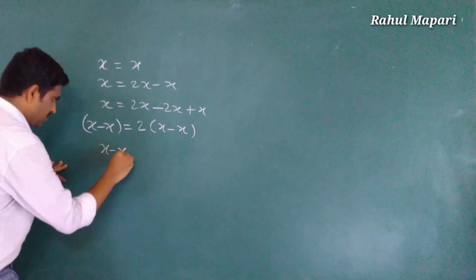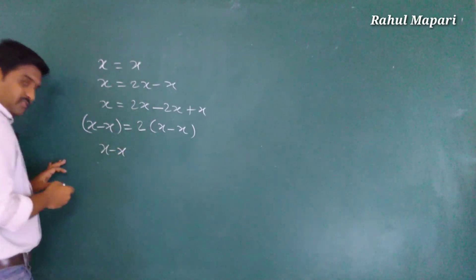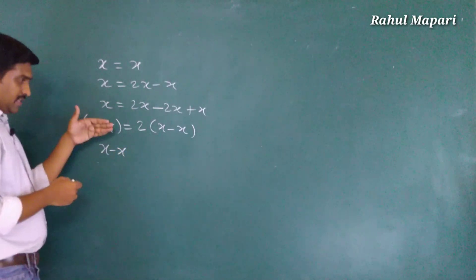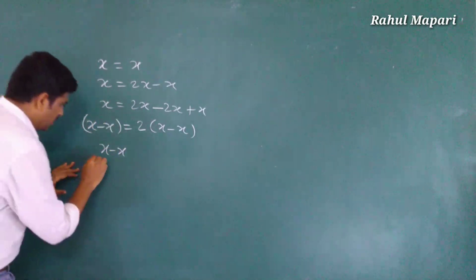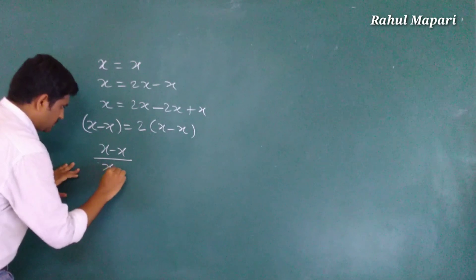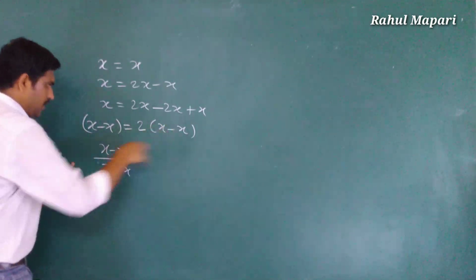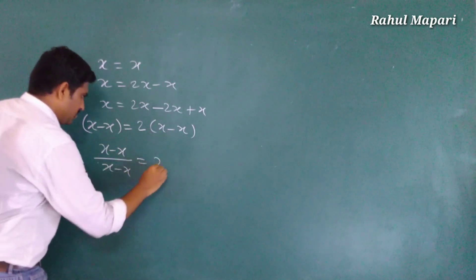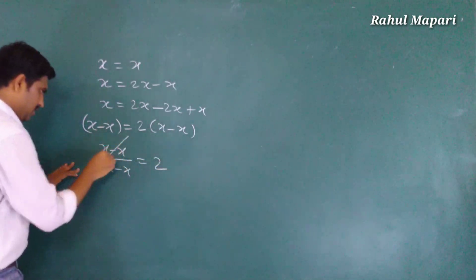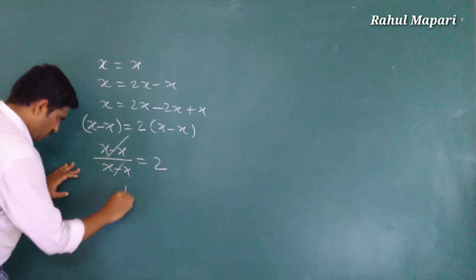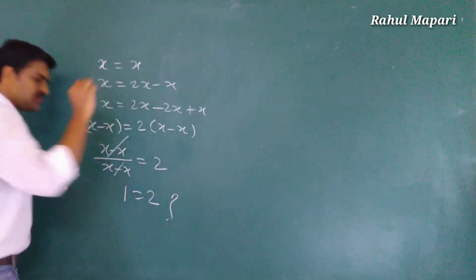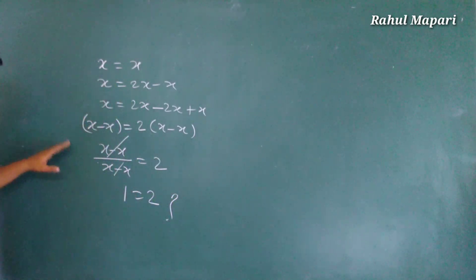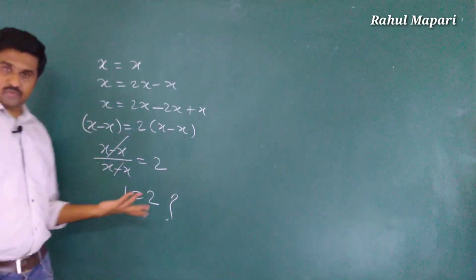I will write one more step because they skip it — they divide both sides by (x minus x), and this gives equals 2, so one equals two. Like this — so one equals two.